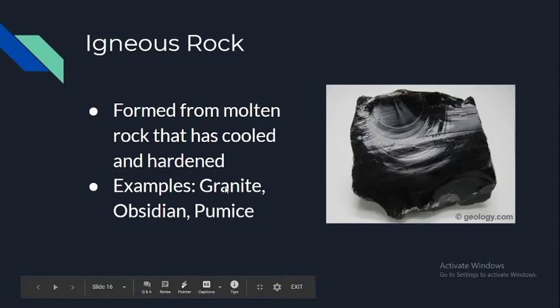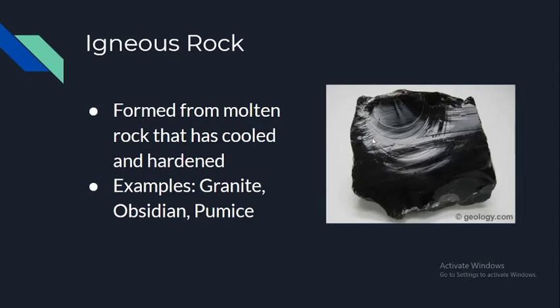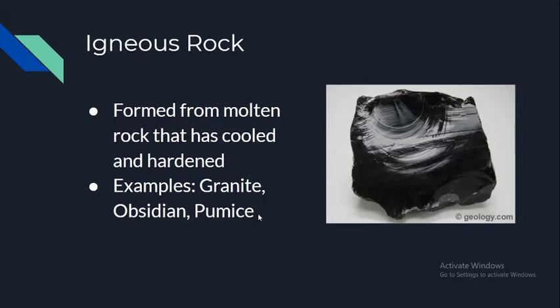There are many types of igneous rock. Granite, which we often use in tabletops, has nice patterns, different colors, and is a very hard rock. Obsidian looks almost like glass — shiny, glossy, and black — and was often used to make arrowheads.